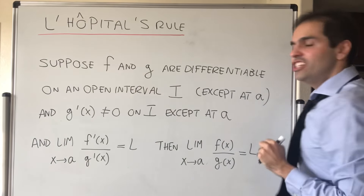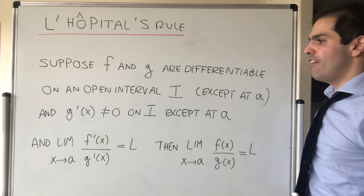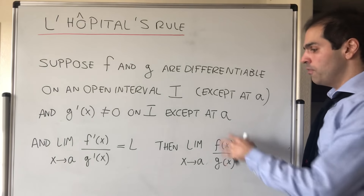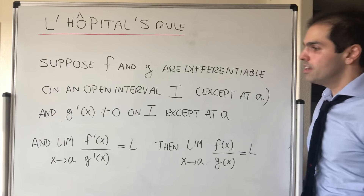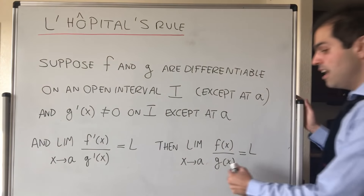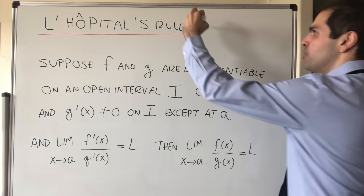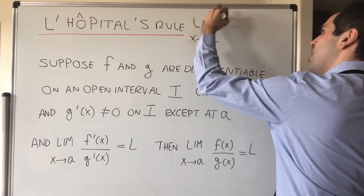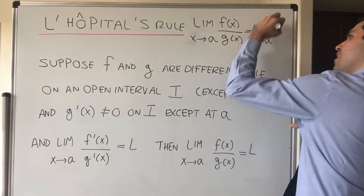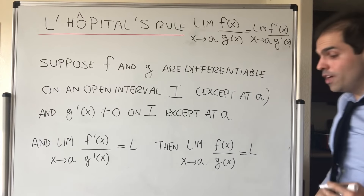Suppose you have two functions f and g that are differentiable on an open interval I, except possibly at the point you're evaluating your limit at. Suppose the derivative of the denominator is never zero, except at the point A, and suppose that the limit of the derivatives exists and equals L. Then the limit of the original fraction equals L — that is, the limit as x goes to A of f(x)/g(x) equals the limit as x goes to A of f'(x)/g'(x). So if this limit exists, then the original limit exists.